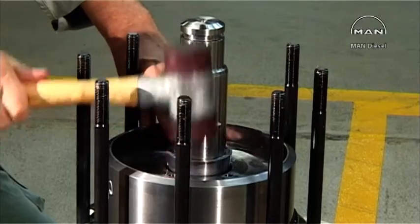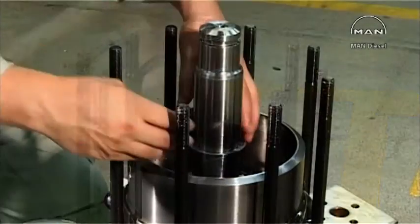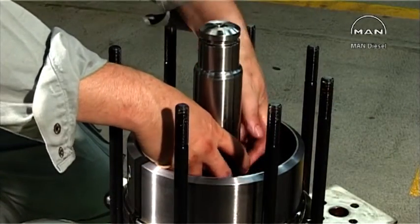Use a tin hammer to hit the piston into the air cylinder, after which the cone rings can be removed.